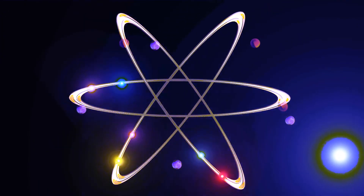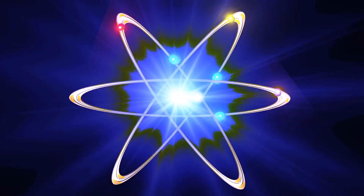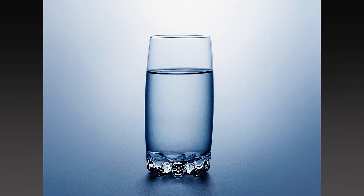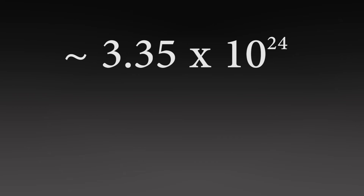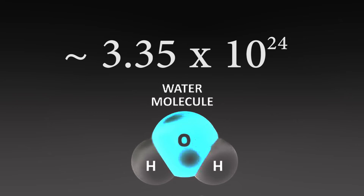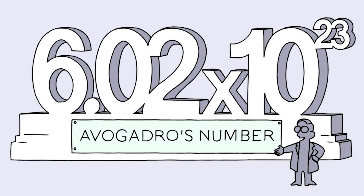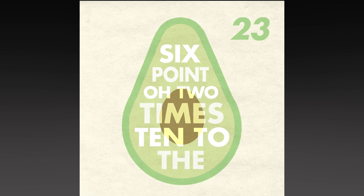Because there are so many atoms and molecules in such a small space, we use the mole as a convenient way to talk about them. For example, consider this glass of water. Your standard glass of water is approximately 100 milliliters. It contains roughly 3.35 times 10 raised to the 24 water molecules. That is H2O.